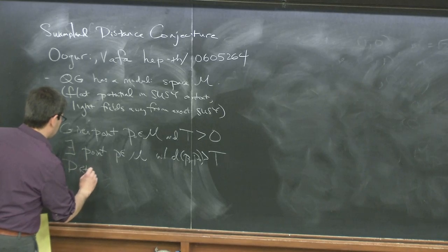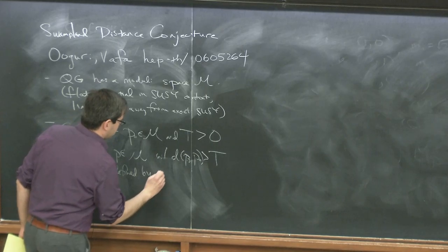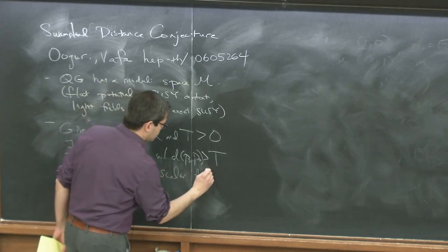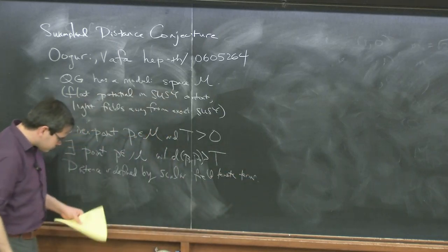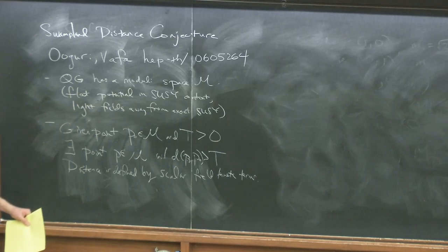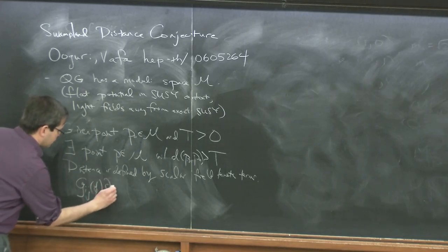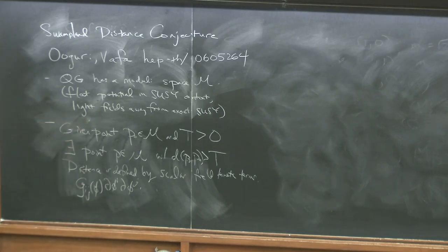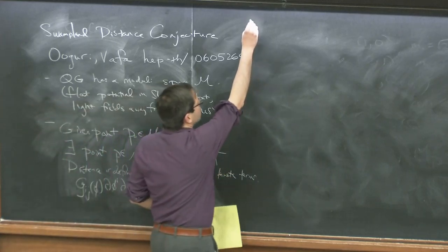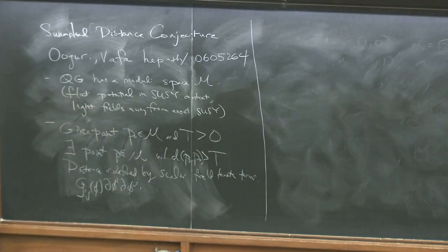The distance is defined by the scalar field kinetic terms — there's some metric g_ij(φ) dφ^i dφ^j. This is the same metric that appeared in Palti's statement of the Weak Gravity Conjecture with scalar fields — when you compute the attractive force on uncharged objects due to scalars, you need to know the metric on that space.